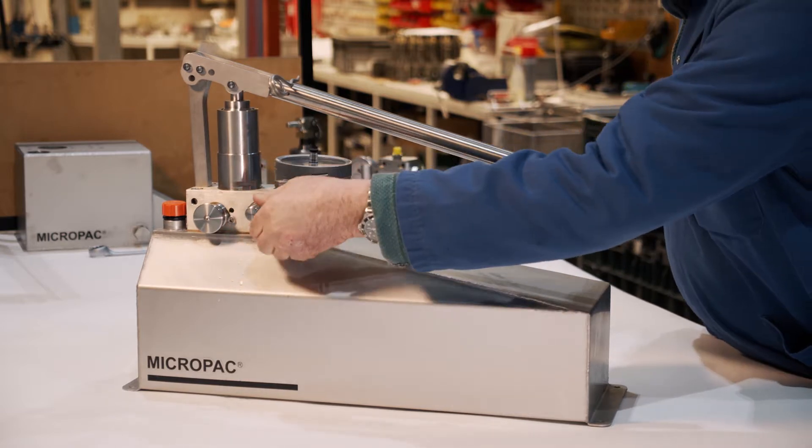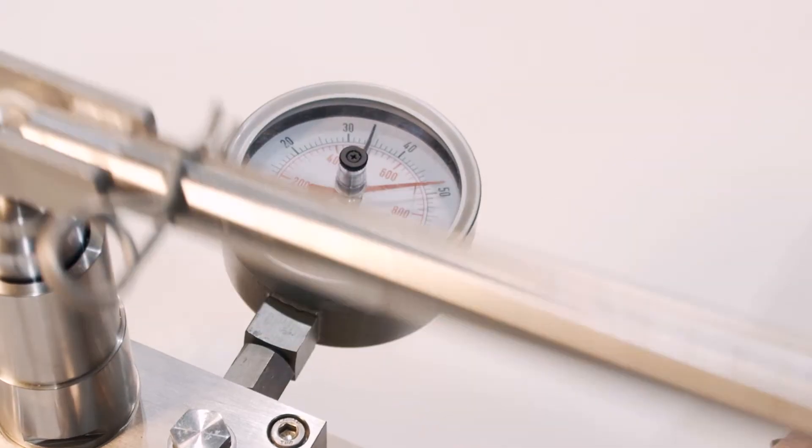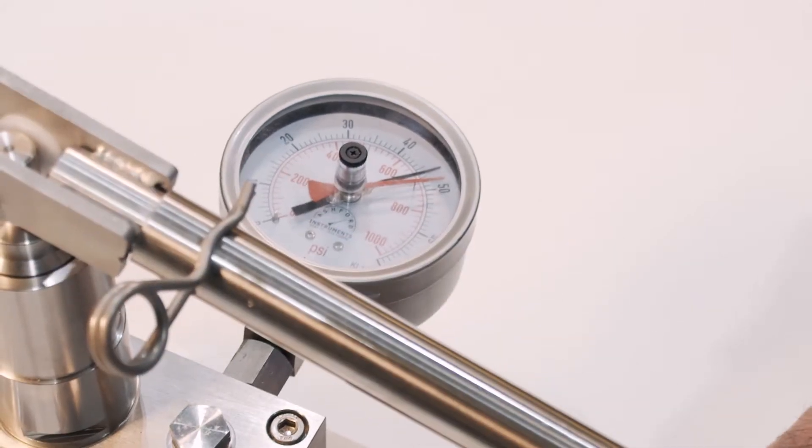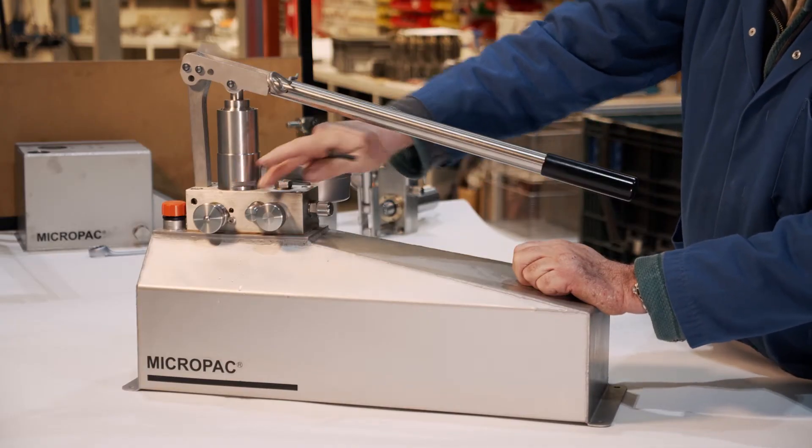Make sure the cap is on. Let's pump it up again. And there we are. 50 bar on our pressure gauge. That's how easy it is to set a Micropac relief valve.